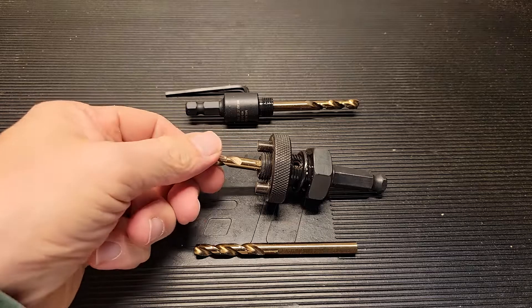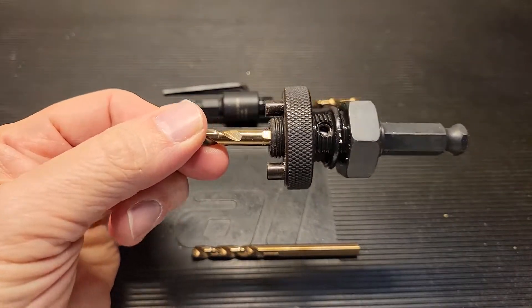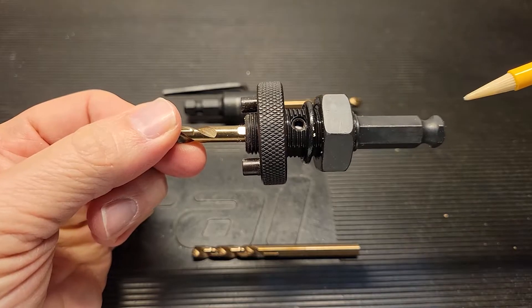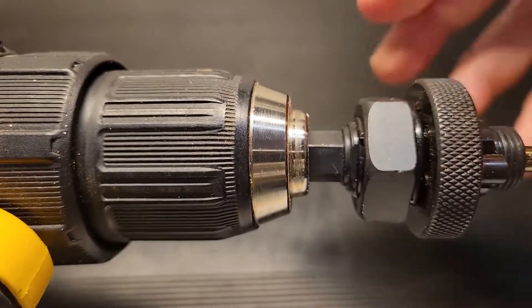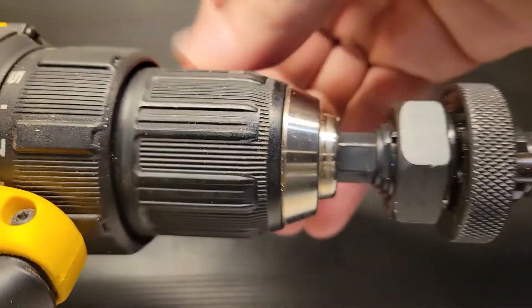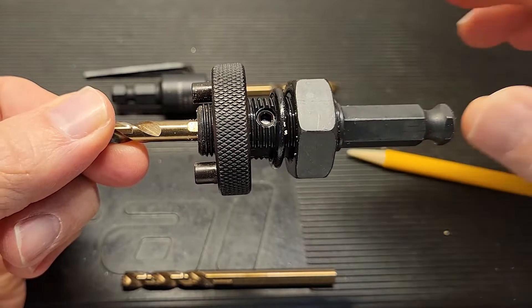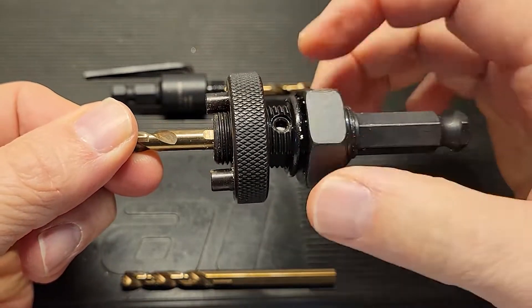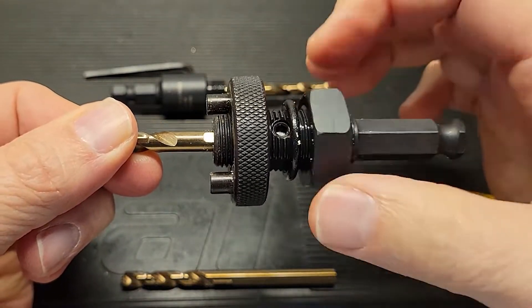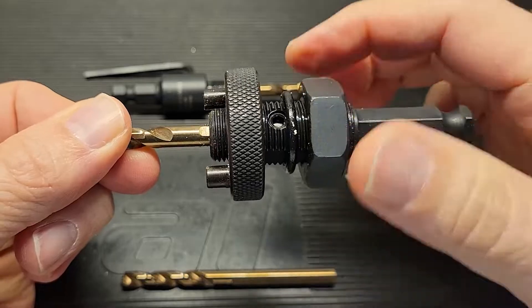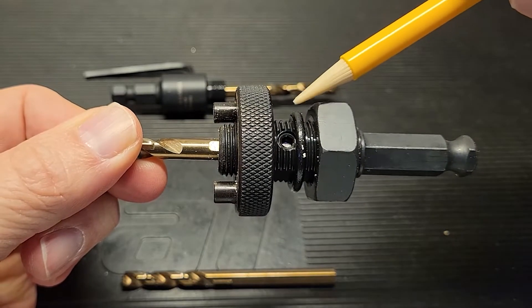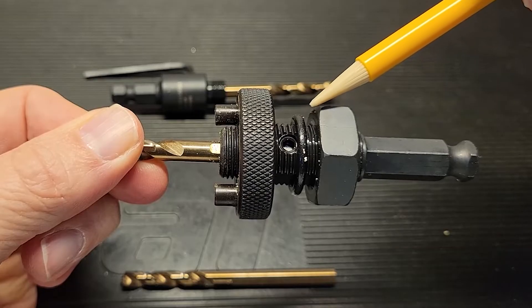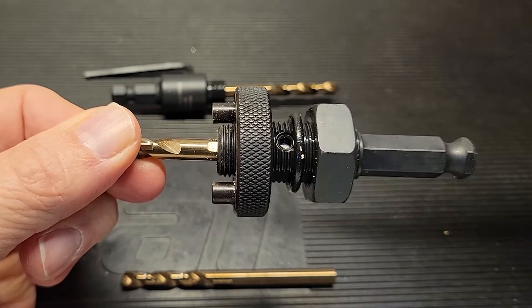Let's start by reviewing the different parts of this arbor. We have the quick change portion back here that allows you to place it onto a drill driver or an impact tool. In front of that is a nut that can freely turn up and down on this shaft, with a stop at the back end. In front of the nut, there's an O-ring that just rides up and down with the nut.